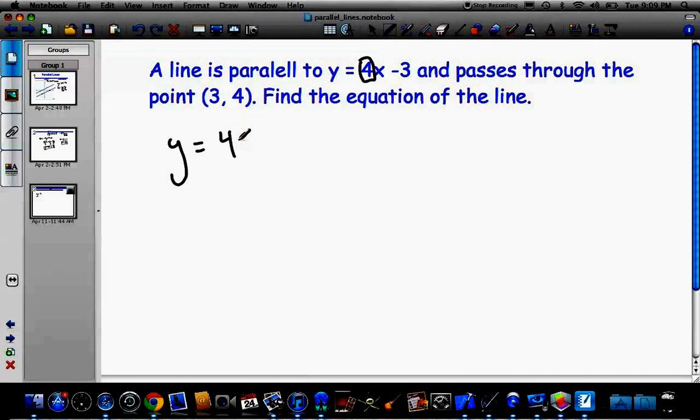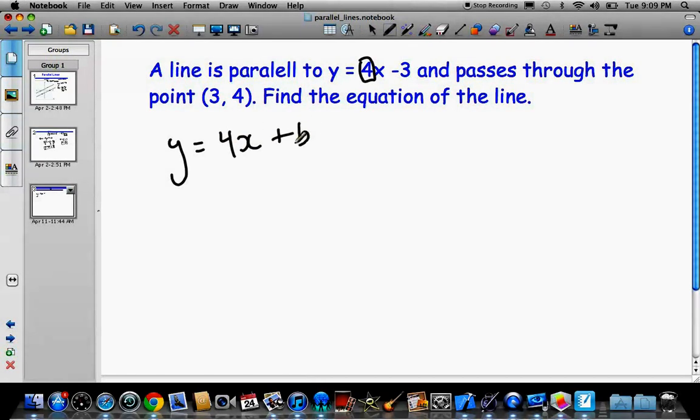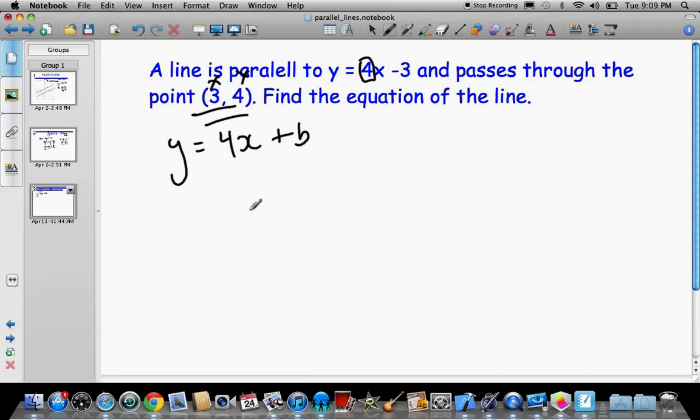So if a line that we're looking for is parallel to this guy, so it's parallel to 4x minus 3. So right here, that's our slope. So the slope of our line is y equals 4x plus b. So we just sub it in where the slope would be in y-intercept form. Now we know a point on our line is (3, 4). So x, y. We can sub that into our y equals mx plus b form and solve for b.